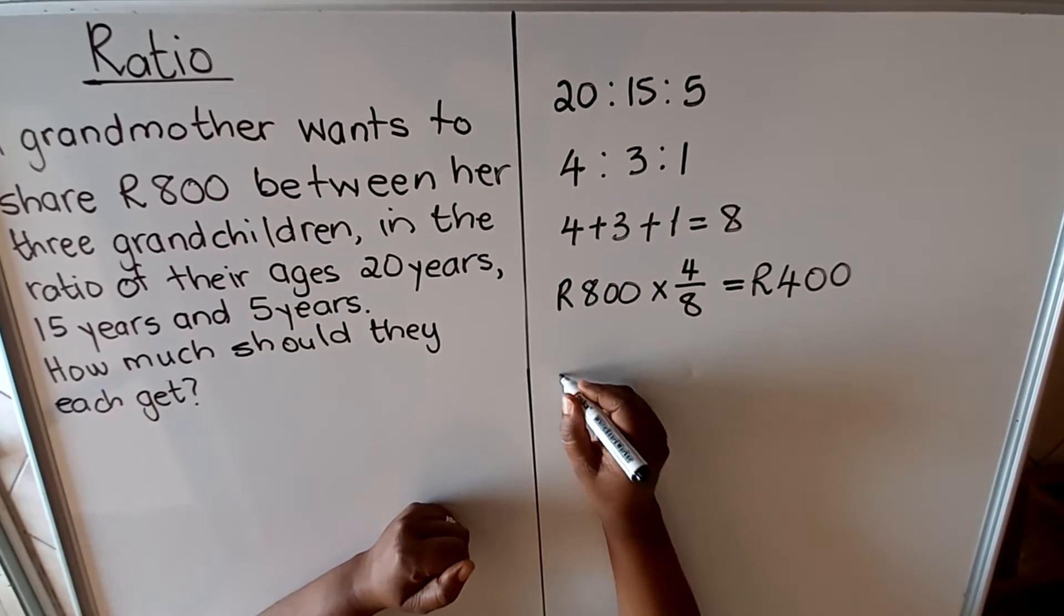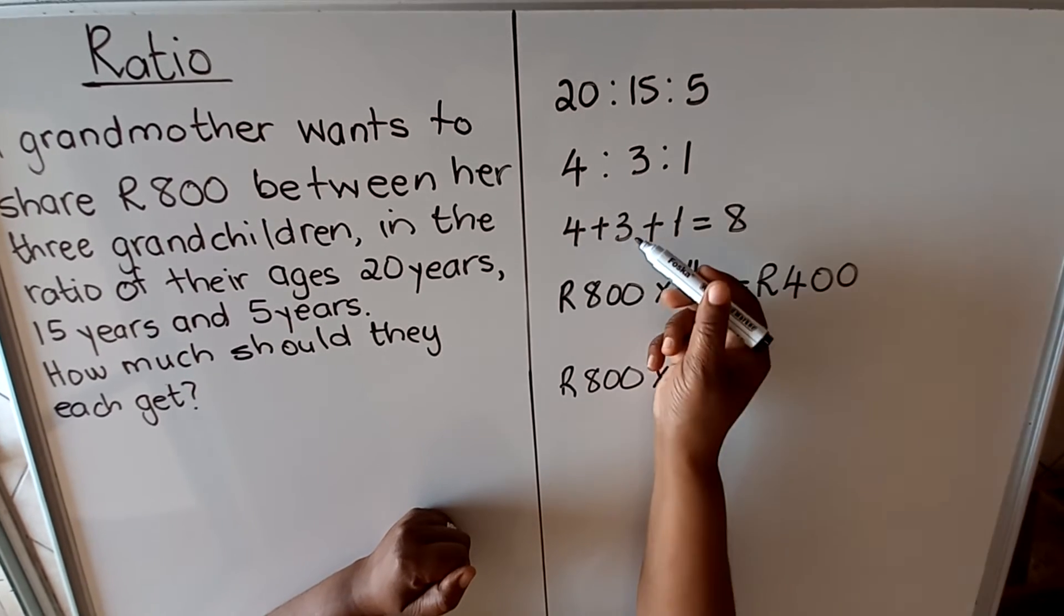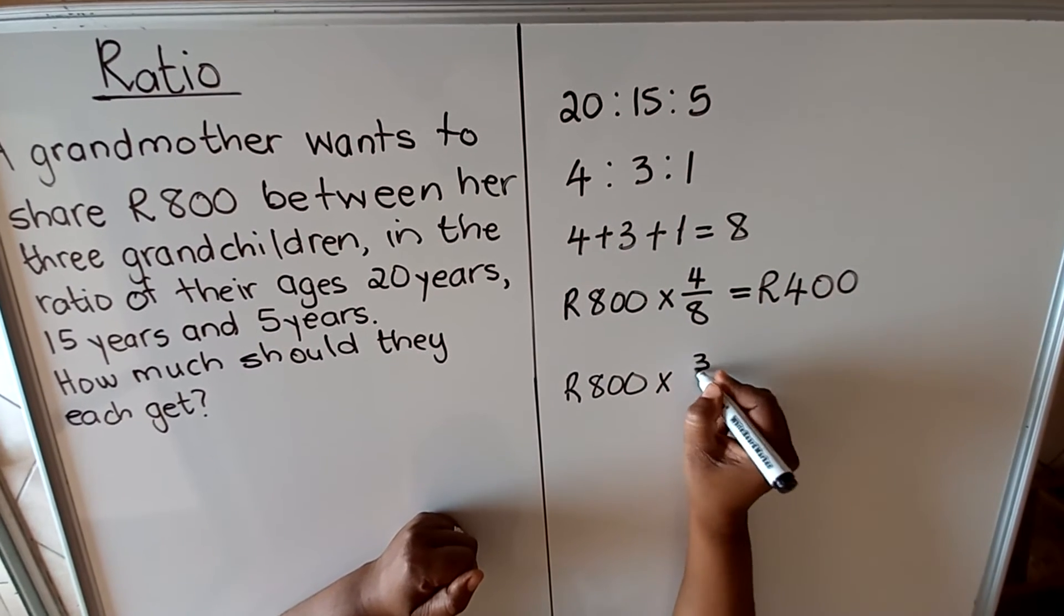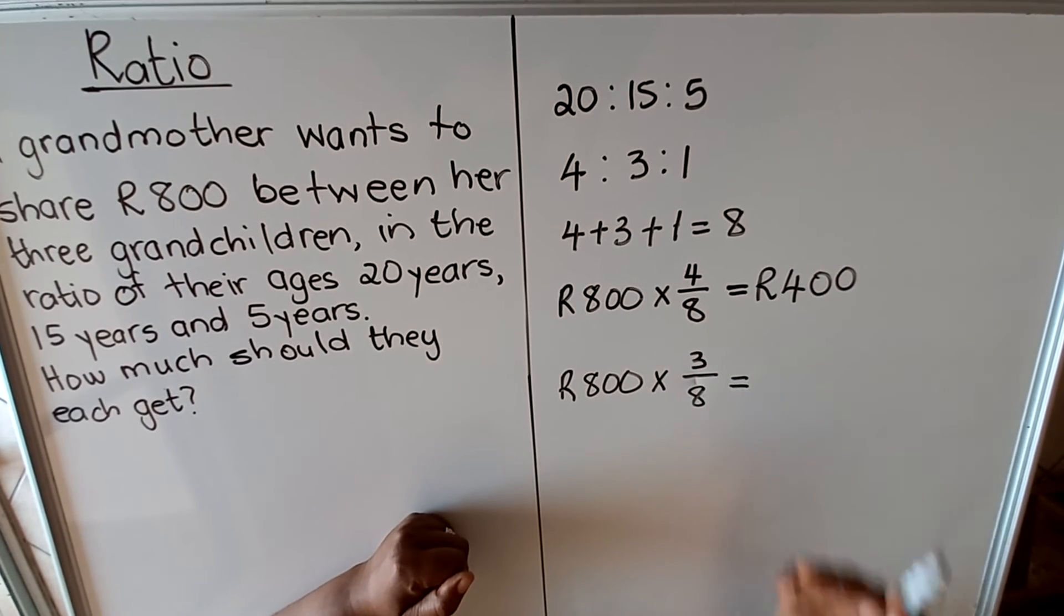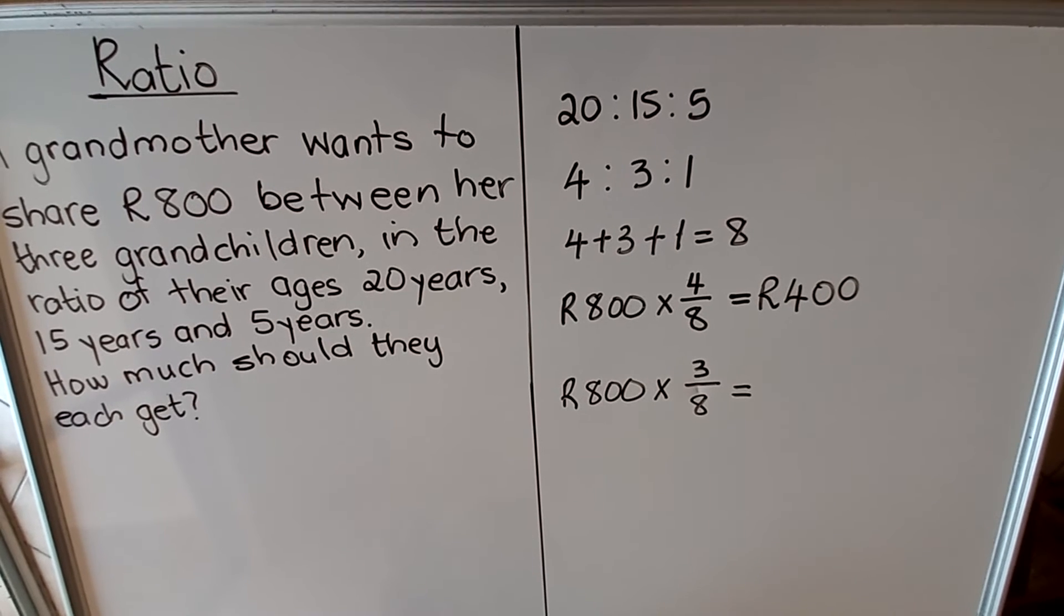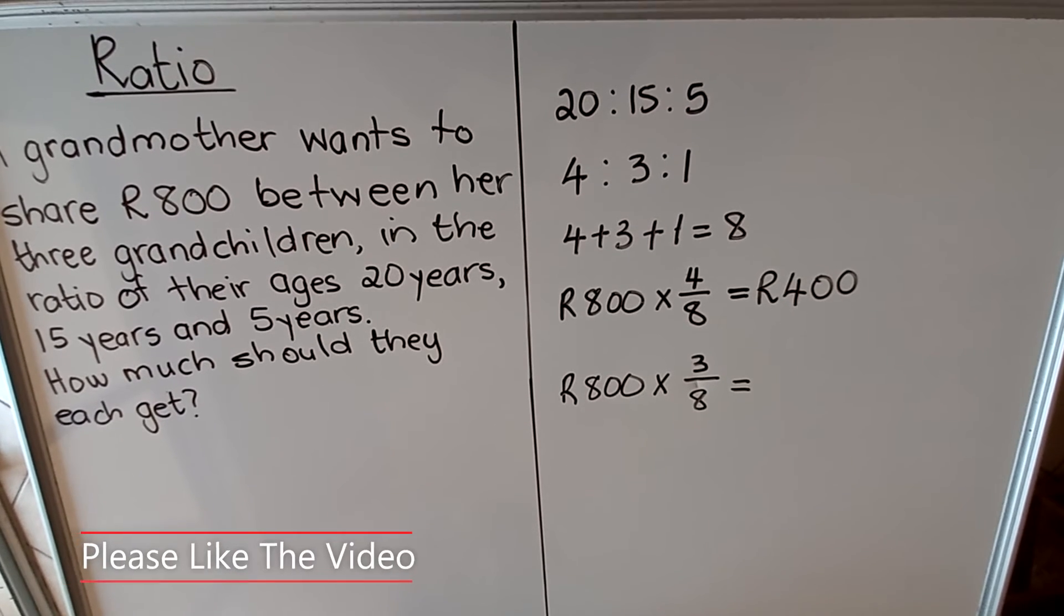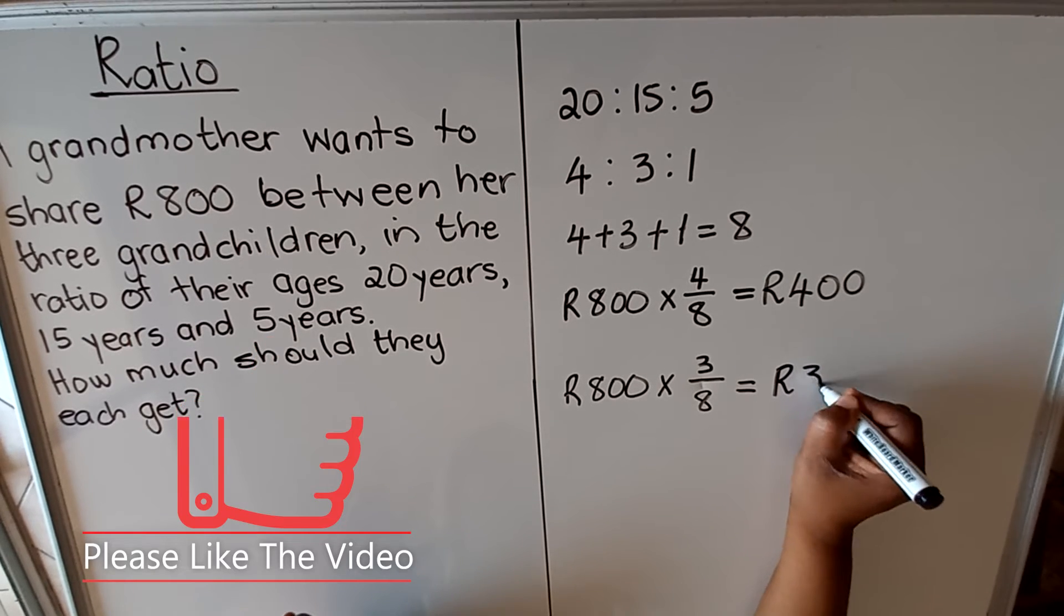For the second child, you will have 800. You're going to multiply with the ratio for the second child, which is 3 divided by the total ratio of 8. Then you take your calculator, you go 800 multiplied by the fraction 3 over 8, and then you find that the second child, the one that is 15 years old, will get 300.